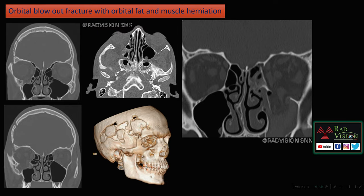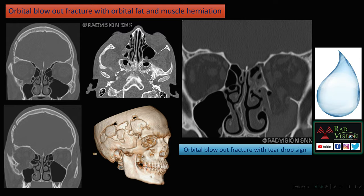Next is an orbital blowout fracture extending into the frontal bones. There is herniation of orbital fat along with the extraocular muscles into the maxillary sinus — this is classically called the teardrop sign. Remember teardrop sign in orbital blowout fracture.